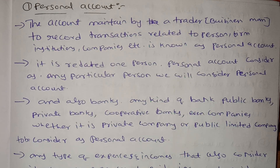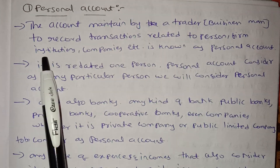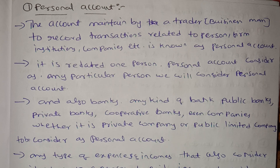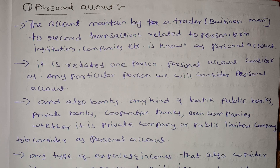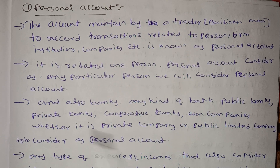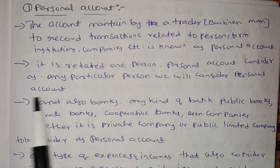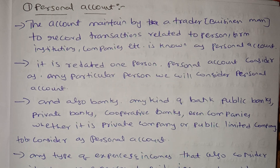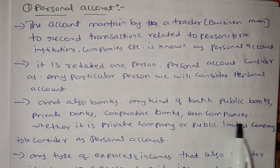We have three types of accounts: personal account, real account, and nominal account. A personal account is considered for any particular person. Personal accounts also include banks — any type of bank, public bank, private bank, cooperative bank — and even companies.